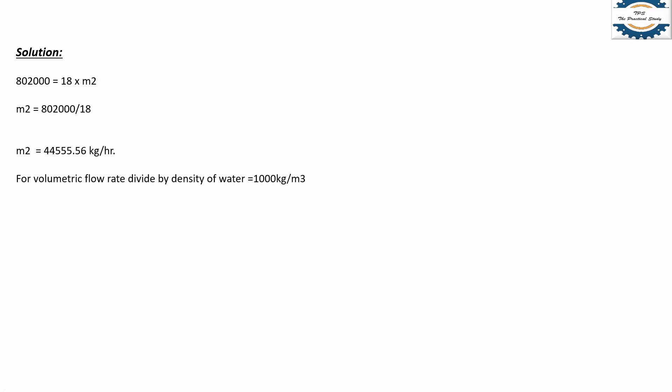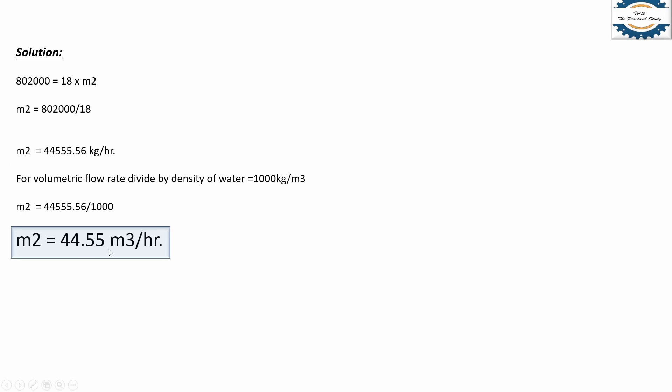Converting to volumetric flow rate by dividing by the density of water, we get M2 = 44.55 m³/hr. That means by installing an after-recovery heat exchanger, and targeting a process water temperature of 70°C, we can recover approximately 44 cubic meters of hot water per hour from the waste heat of this 1.5 MW generator. This was today's video — if you liked it, please share your comments and share the video with your colleagues and friends. Thank you.